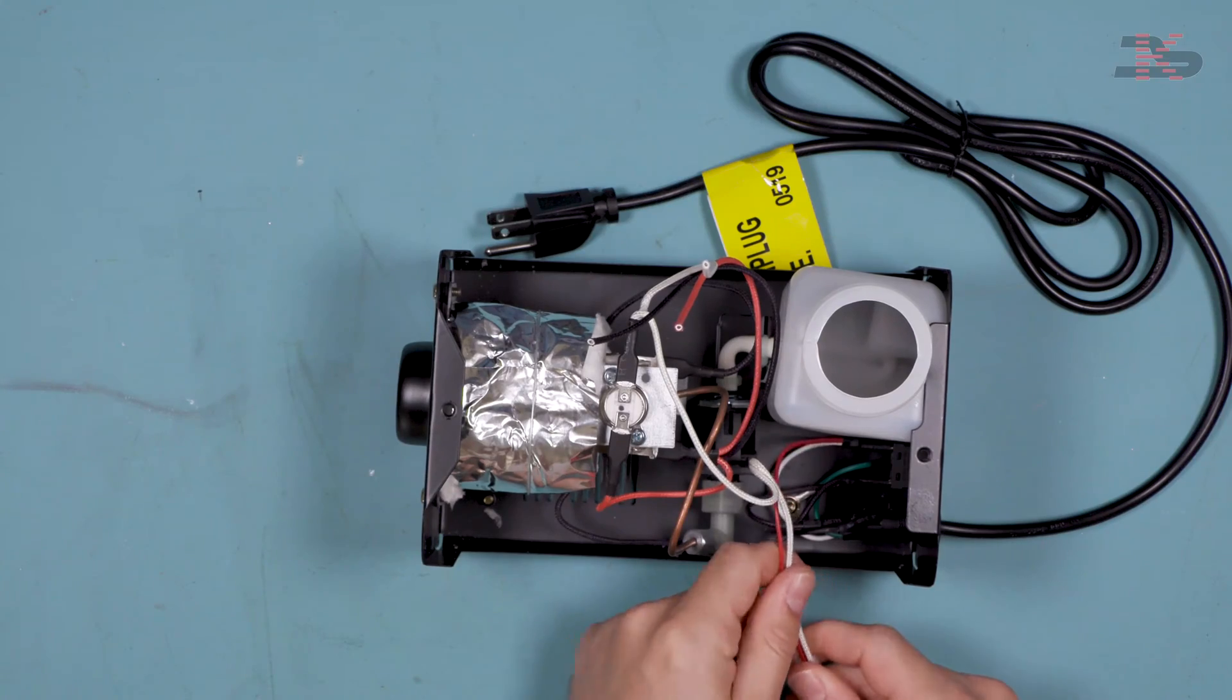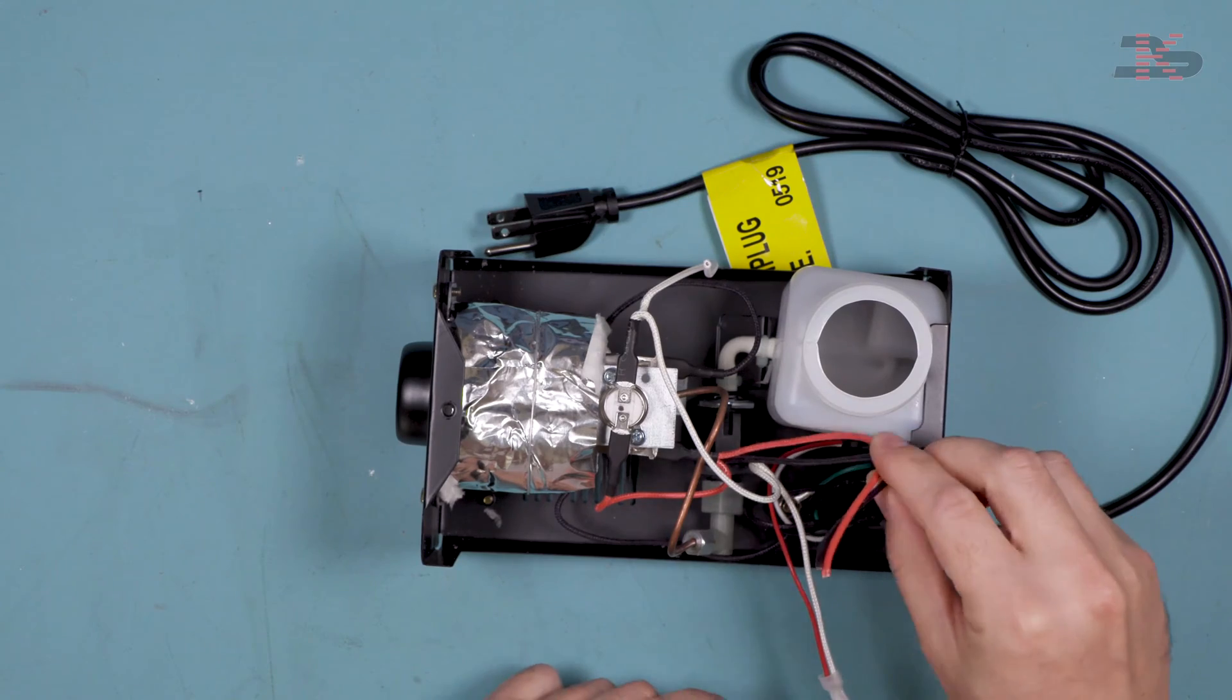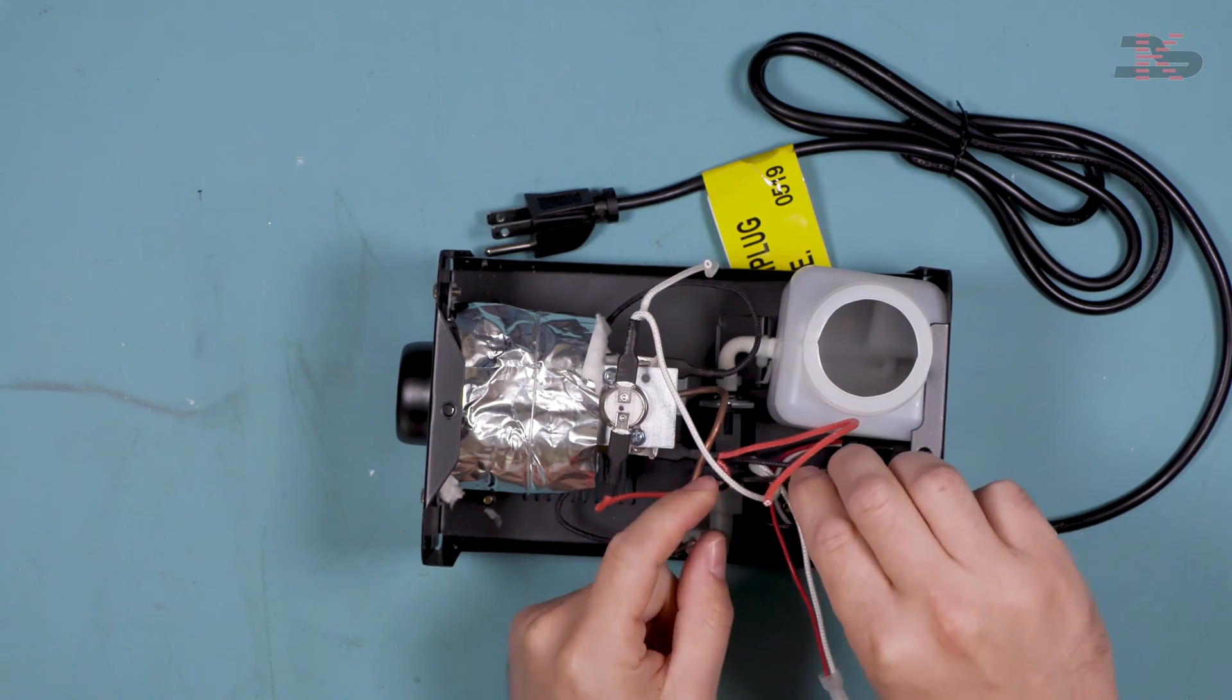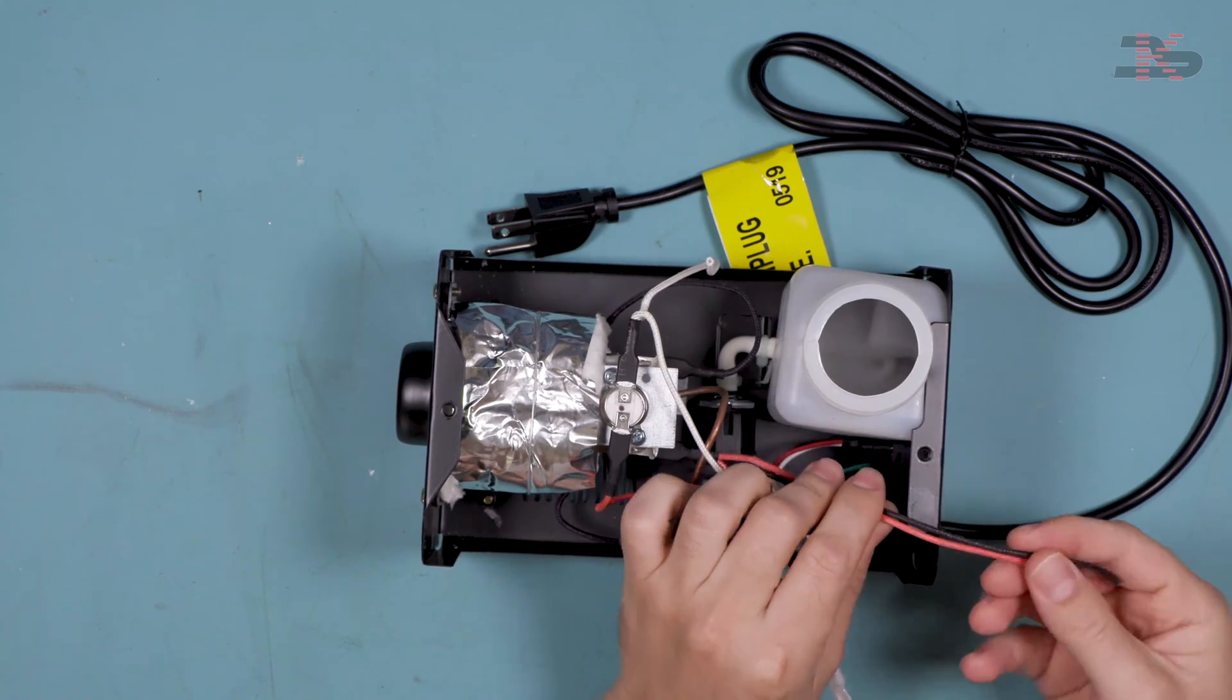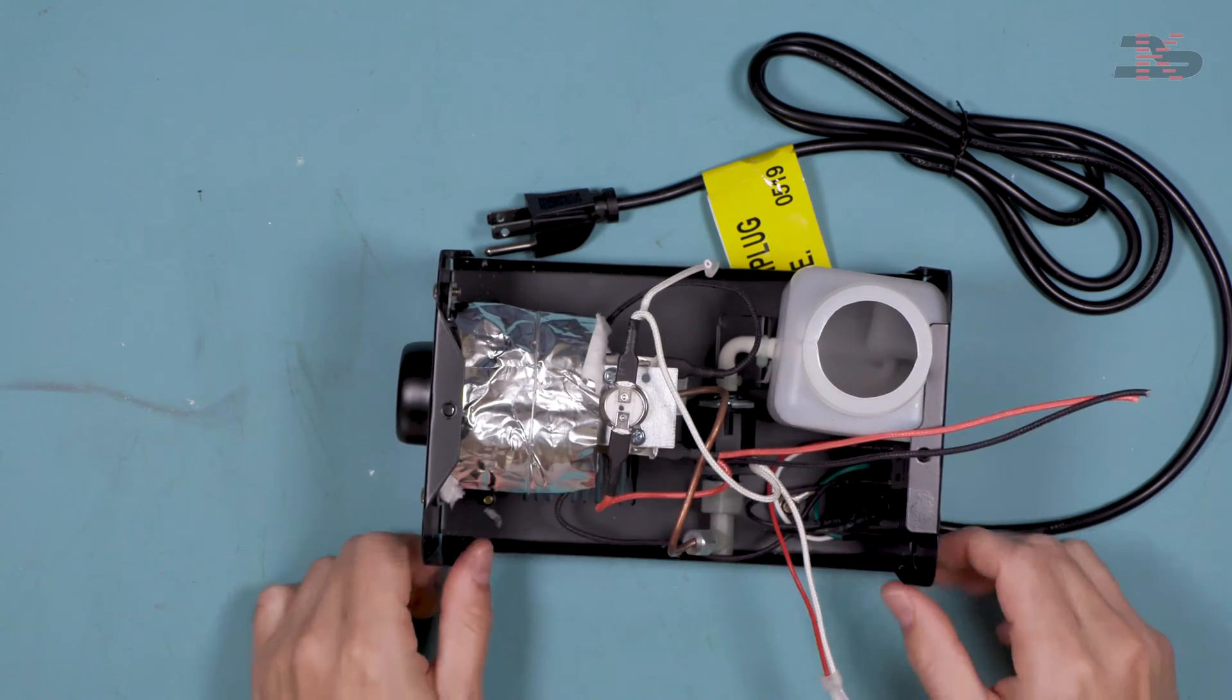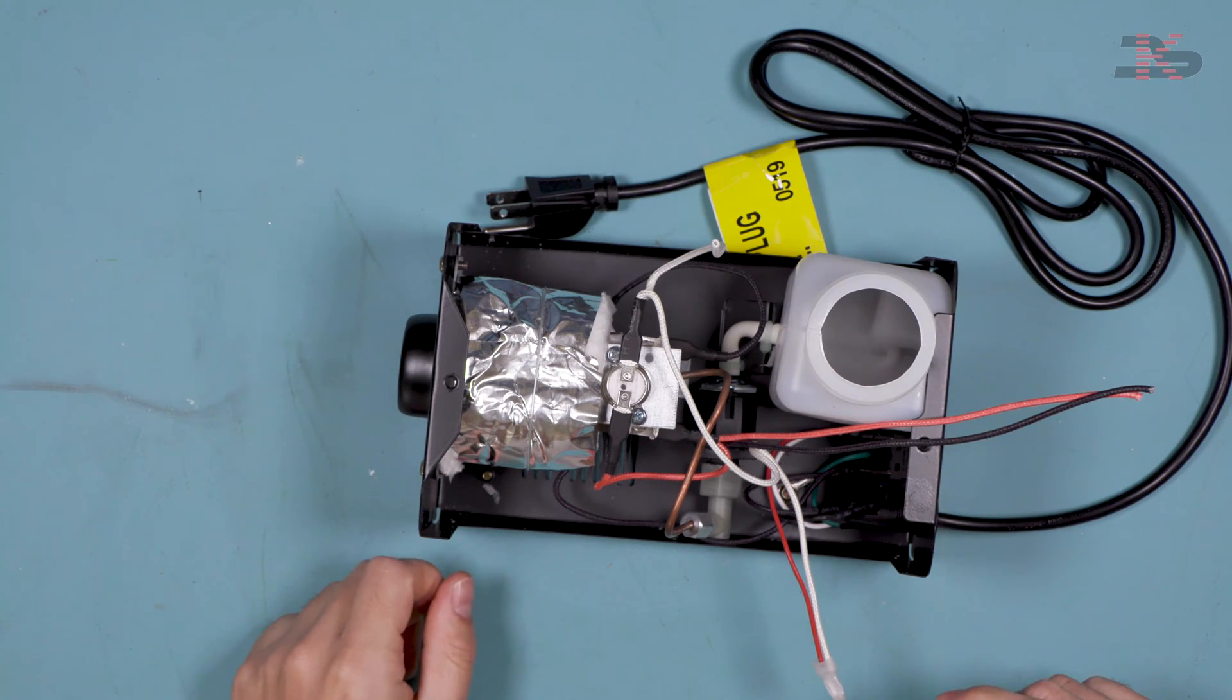Next thing we're going to do is just cut this zip tie right here because we will need to get into this guy here. Now this black and red wire, we're actually going to use just as they are. So we will just route these out of the way for now and we'll come back to those.